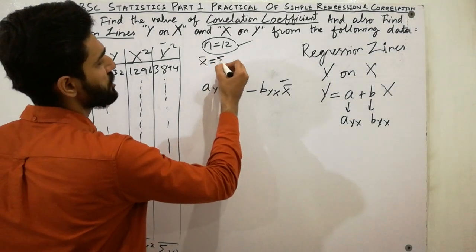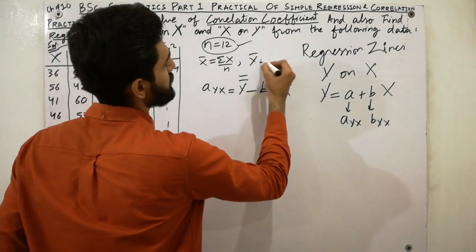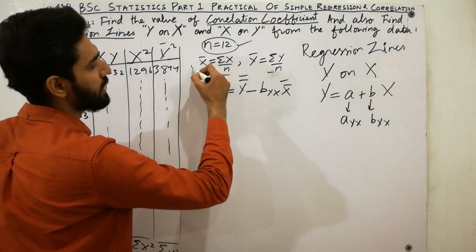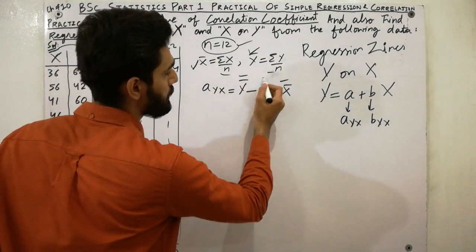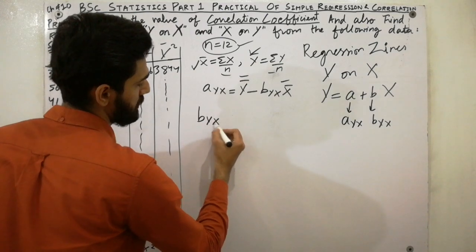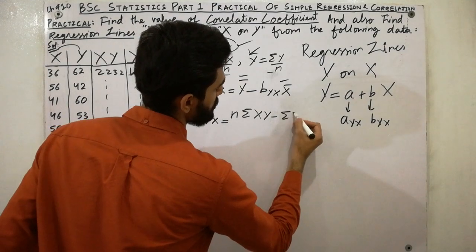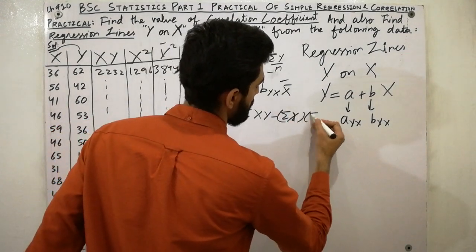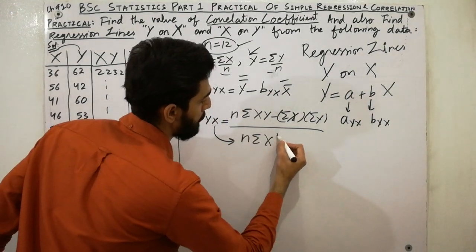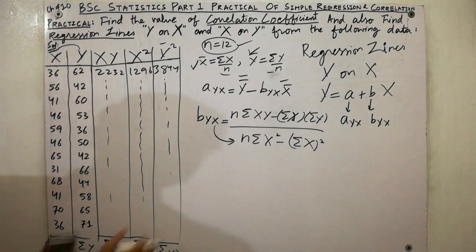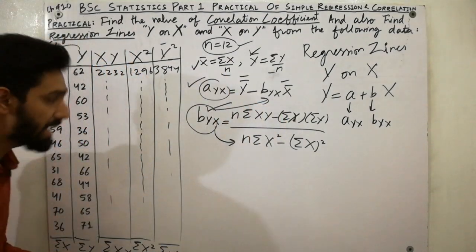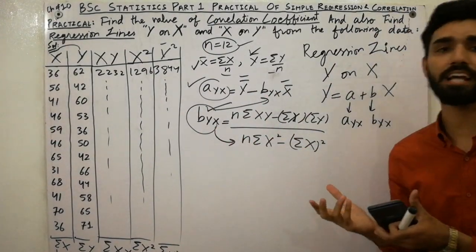x̄ = Σx / n and ȳ = Σy / n, where n is the number of values. Put in the values of Σx and Σy to calculate x̄ and ȳ. The regression coefficient b(yx) formula is: n·Σxy minus Σx·Σy, divided by n·Σx² minus (Σx)². Put all the sums into this formula to calculate b(yx), then substitute it into the a(yx) formula to get the full regression line y on x.